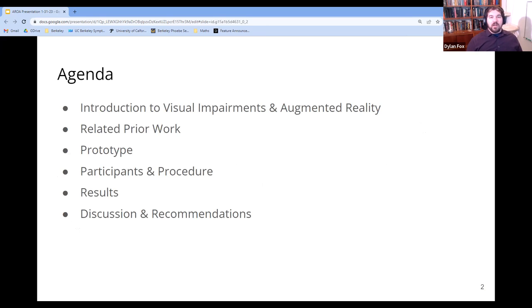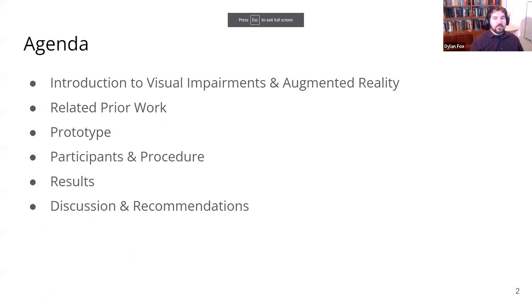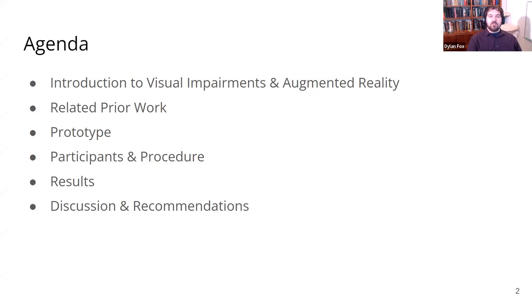To give a preview of what I'm going to be telling you today: we are going to be talking first about the definition of visual impairments, what is augmented reality, and how can the latter help with the former. We're going to discuss some related prior work and the knowledge gap that we sought to address with our experiment.